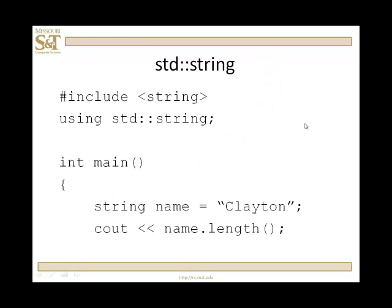Referring to the standard string, suppose we declare 'name' to be a string and give it a value of Clayton. I want to output 'name.length()'. Clearly this is a function call because of the parentheses. Notice the dot operator — you've seen this before with structs. What you're doing here is calling a member function of the class of objects to which 'name' belongs — the string class. We'll look at this in more depth when we get into object-oriented programming in later lessons.